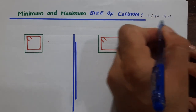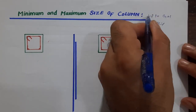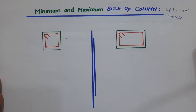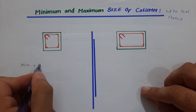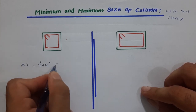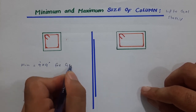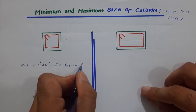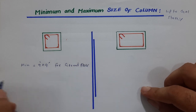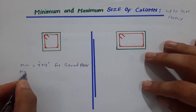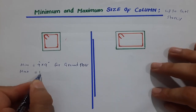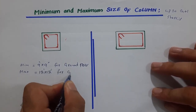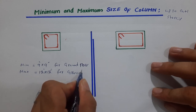For G plus one story — ground floor plus first floor — the minimum size of the column should not be less than 9 by 9 inches for ground floor. The maximum size for ground floor is 12 by 12 inches.